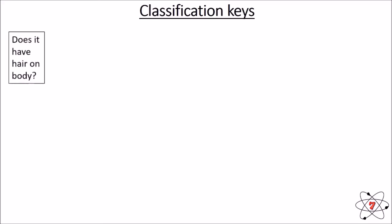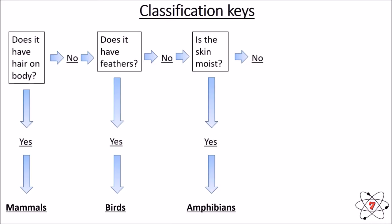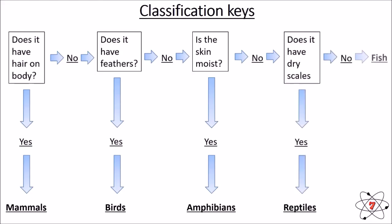One tool we can use to help classify things is known as a classification key. Classification keys are a series of yes-or-no questions. For example, the first question might be: does it have hair on its body? If yes, the organism is a mammal. If no, we ask: does it have feathers? If yes, it must be a bird. If no, we ask: is the skin moist? If yes, it must be an amphibian. If no, we ask: does it have dry scales? If yes, it will be a reptile. If no, it will be a fish. So this is a very simple classification key asking yes-or-no questions that allows us to classify vertebrates.